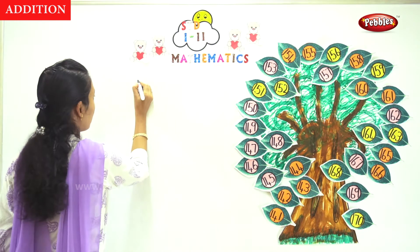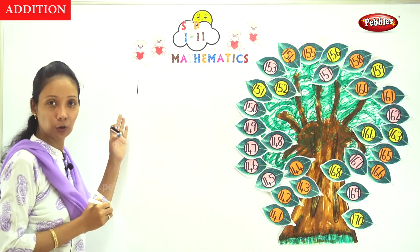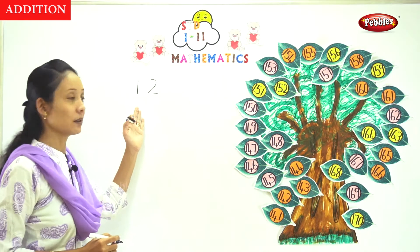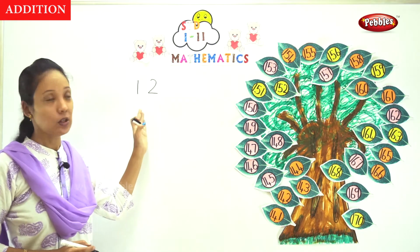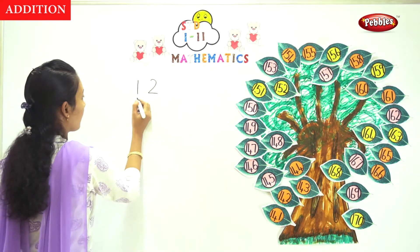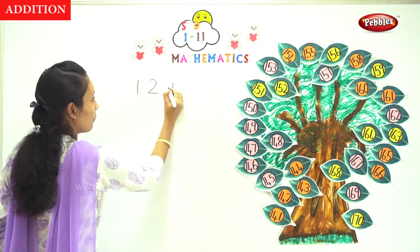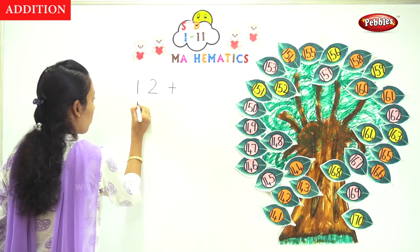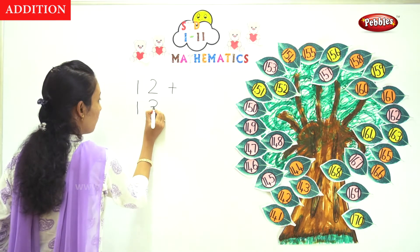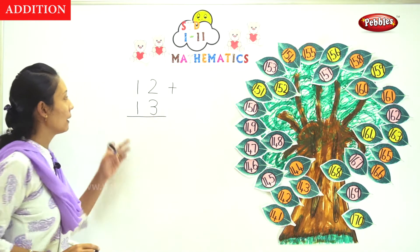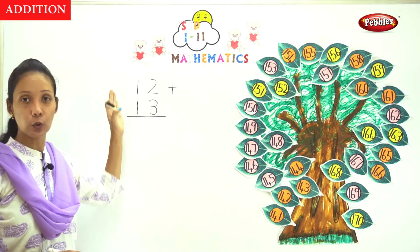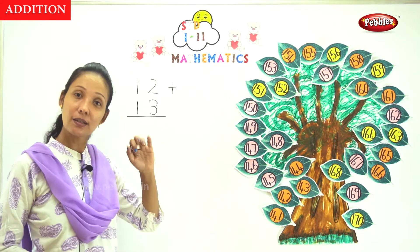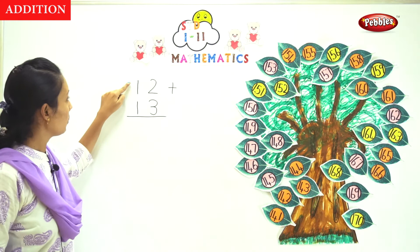So, this is 1 and 2, which makes 12. And here again, I will give you 1 and 3, which is 13. So the question is: you have to add 12 plus 13. You have already learned single-digit addition. Now this is double-digit. You have to add 12 plus 13.